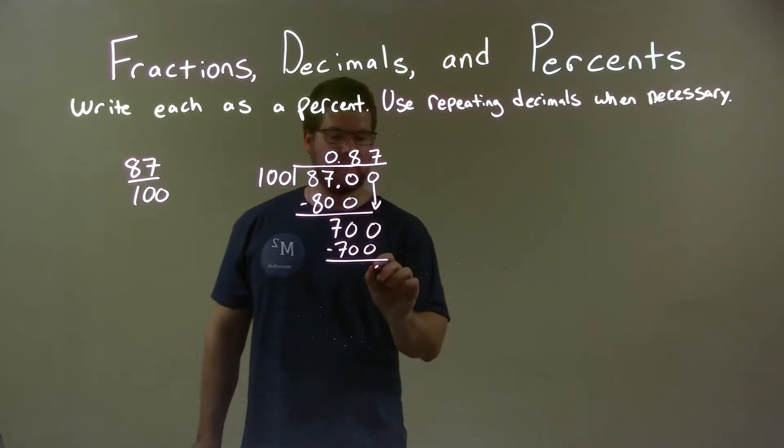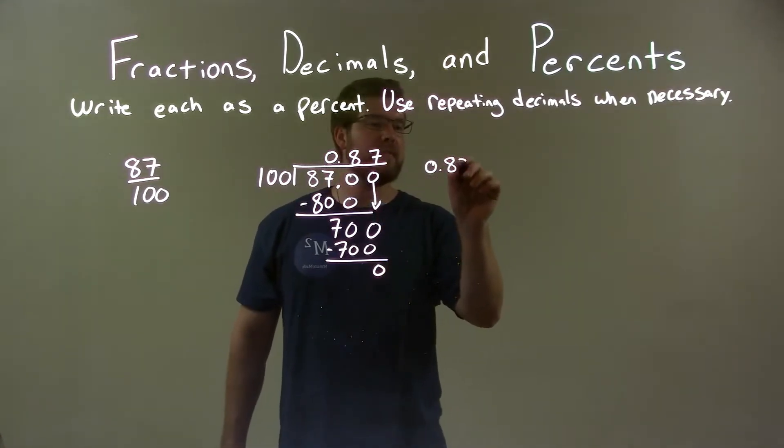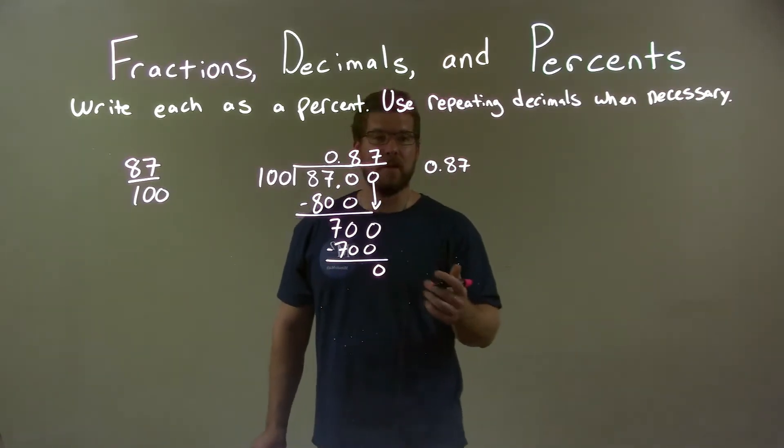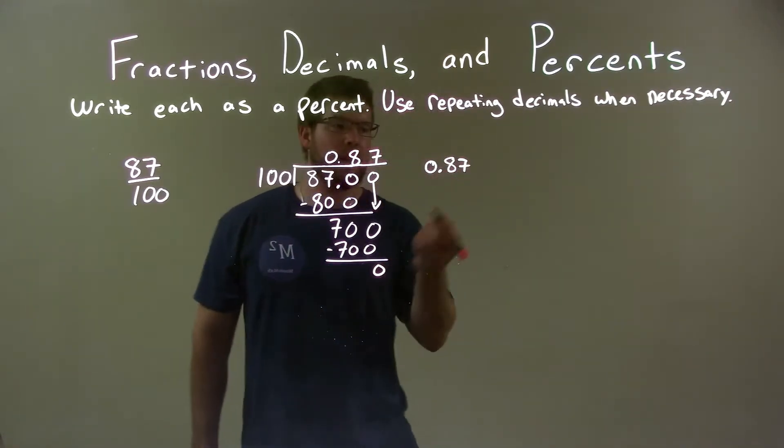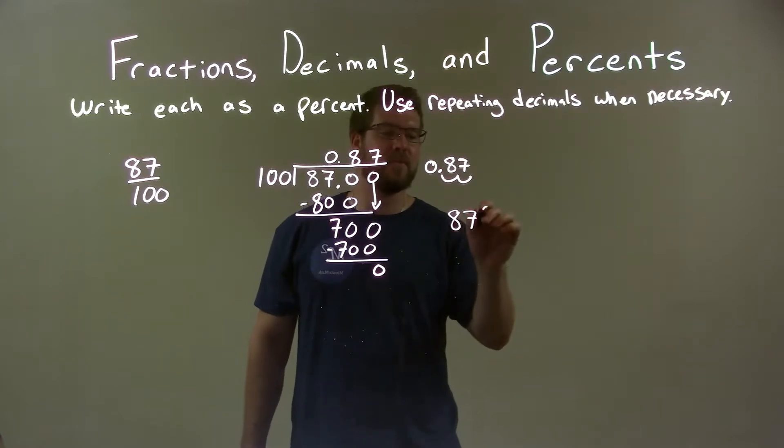700 divided by 700 is 0. So we have our decimal 0.87 and I have to write that as a percent. Well, we take that decimal place and we can move it two spots to the right to convert a decimal to a percent.